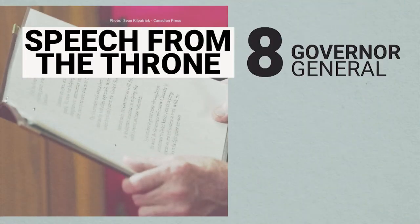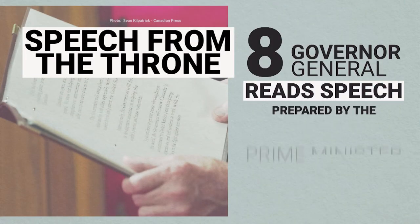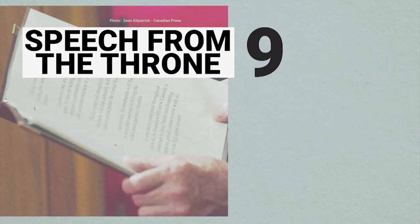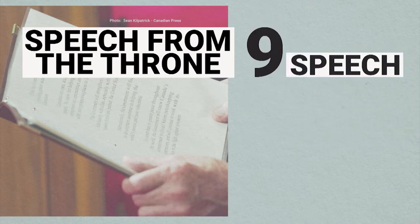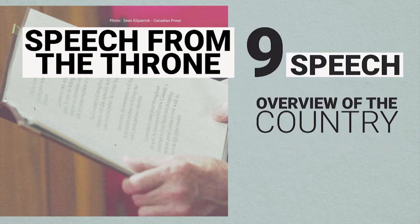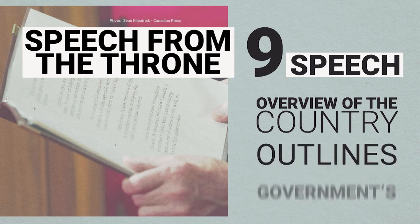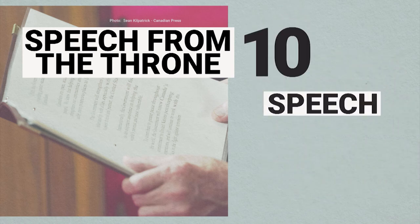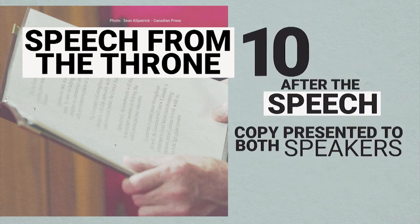The Governor General then reads the speech in the Senate chamber as prepared by the Prime Minister and the Cabinet. The speech starts with an overview of the state of the country and then outlines the government's agenda. When the speech is over, a copy is presented to both speakers.